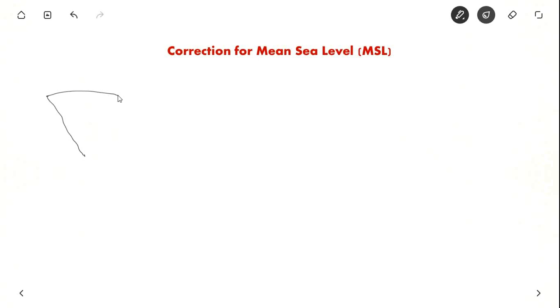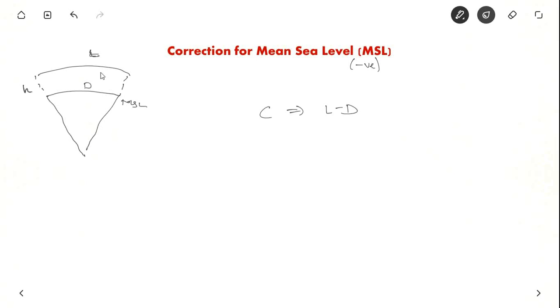The last correction is for mean sea level. Because the earth is curved, all points on the earth are slightly above mean sea level. The measured length is L and the geodetic distance is D, with H being the height above mean sea level. The correction is negative: CM = L − D ≈ LH/R, where R is the radius of the earth (6370 km). These corrections will be very small, and note that this correction is negative.